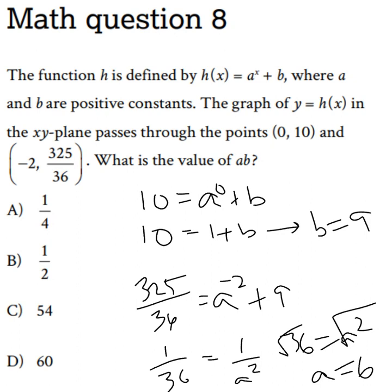Now we have both a and b, and we just multiply 6 and 9, and that gives us 54, which means the answer is C. Make sure you know how to do constant questions for your next SAT.